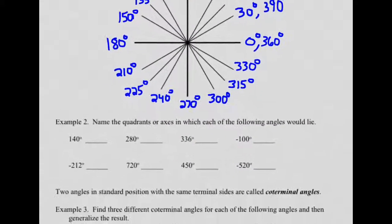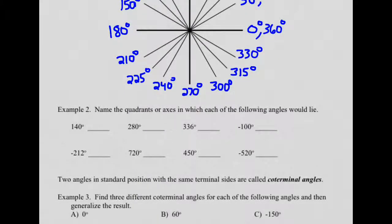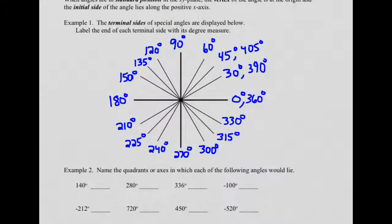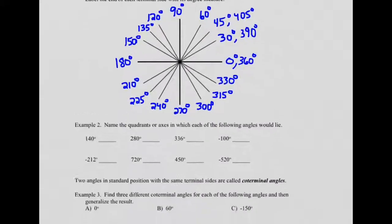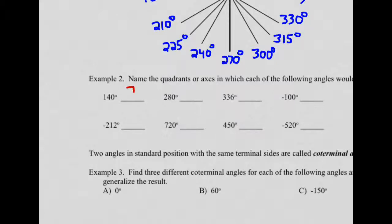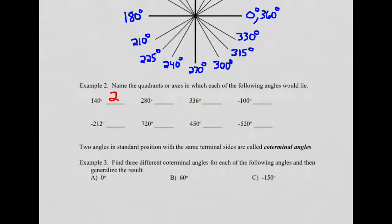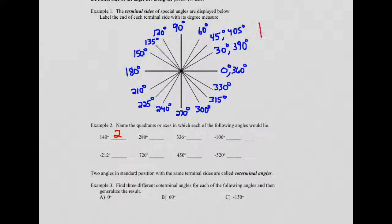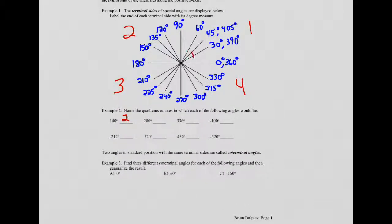An example: name the quadrant or axis in which each of the following angles would lie. A 140 degree angle would have a terminal side somewhere between 135 and 150, so its terminal side is in the second quadrant. Recall: quadrant 1 is where both x and y are positive; quadrant 2 is where x is negative but y is positive; quadrant 3 is where both x and y are negative; quadrant 4 is where x is positive and y is negative. Going counter-clockwise, you move from quadrant 1 to 2 to 3 to 4.